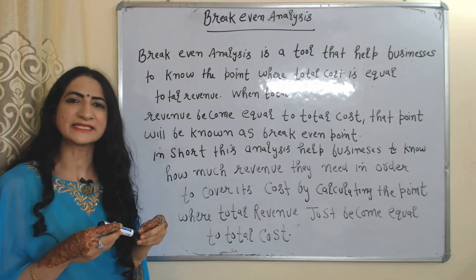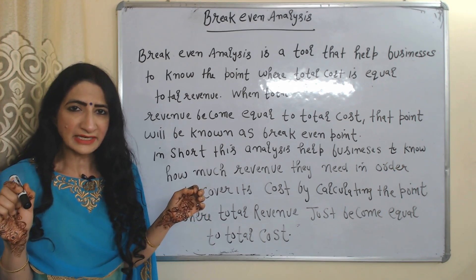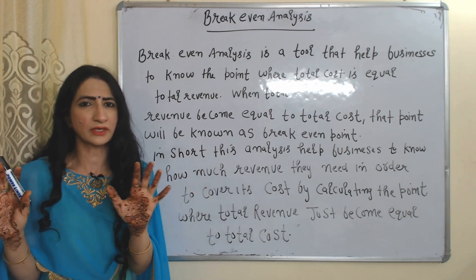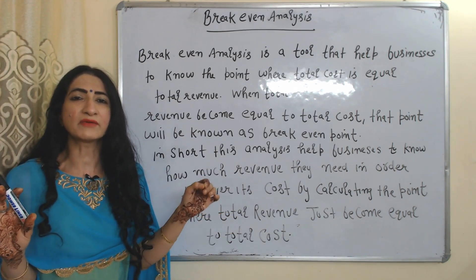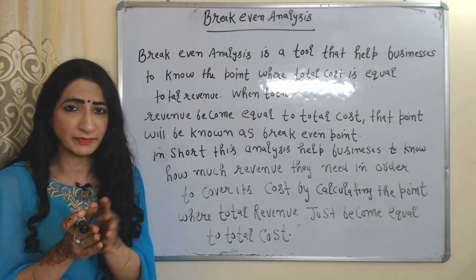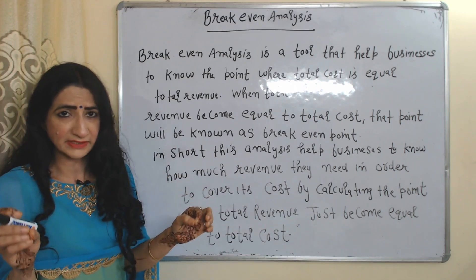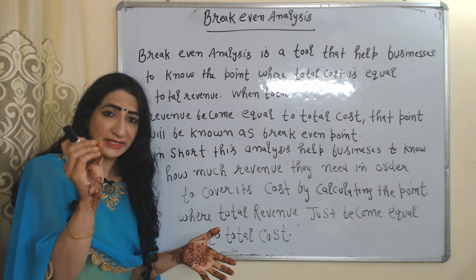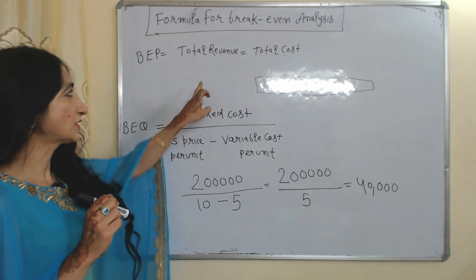Hello everyone, my name is Mini Sethi. I hope you all are staying healthy. Today we are going to talk about breakeven analysis. Breakeven analysis helps businesses to know the point where total revenue just becomes equal to total cost. The point where total revenue becomes equal to total cost is called the breakeven point. Breakeven analysis helps businesses to know how much revenue they need in order to cover their costs.